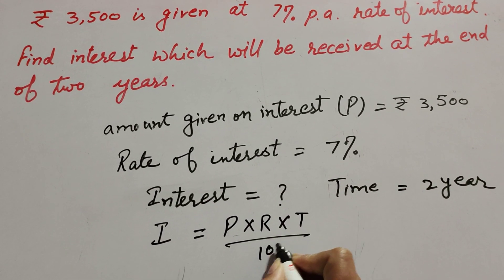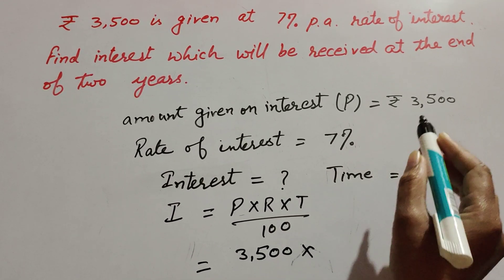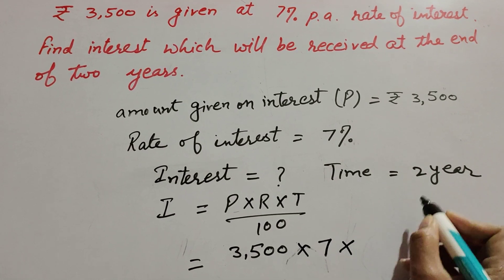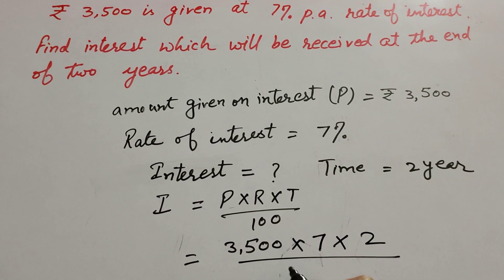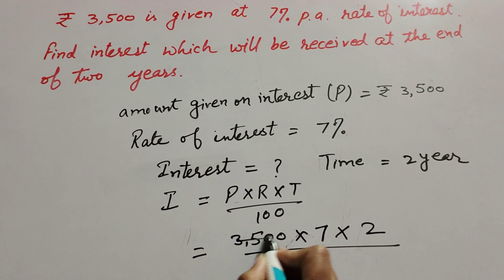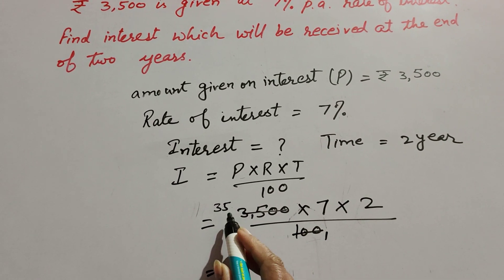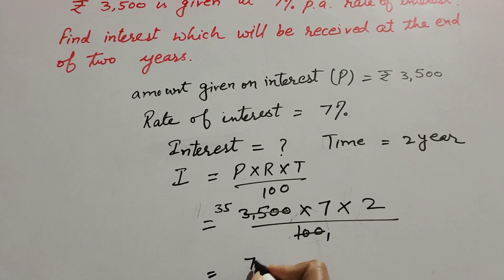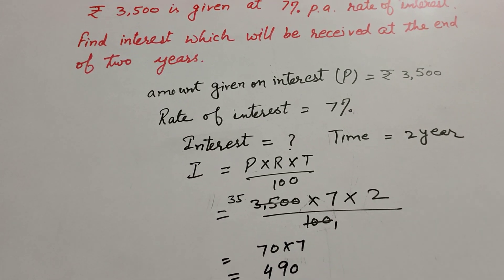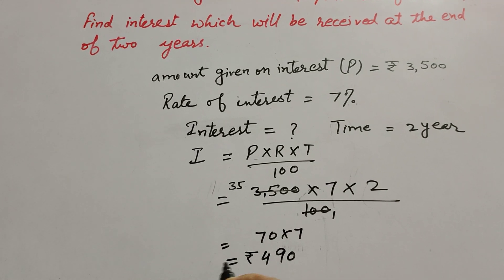Here P is the principal, which is 3500; R is the rate of interest, which is 7; and T is time, which is 2 years, all over 100. 100 and 3500 cancel, giving 35. So 35 multiplied by 2 equals 70, and 70 multiplied by 7 equals 490. So rupees 490 is received as interest after two years.